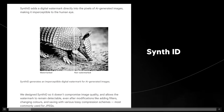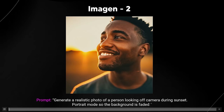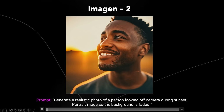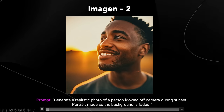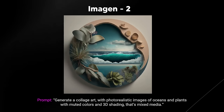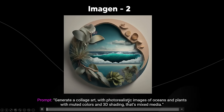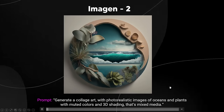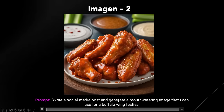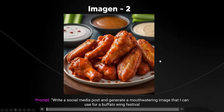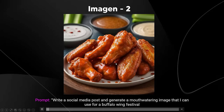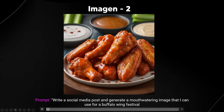Let's look at some individual images. One prompt is 'generate a realistic photo of a person looking off camera during sunset, portrait mode, background faded' — very nice photorealistic result. Another one: 'generate a collage art with photorealistic images of oceans and plants with muted colors and 3D shading' — that's mixed media and really cool. Then: 'write a social media post and generate a mouthwatering image for a Buffalo wing festival' — that actually looks remarkably realistic with great lighting and shading.